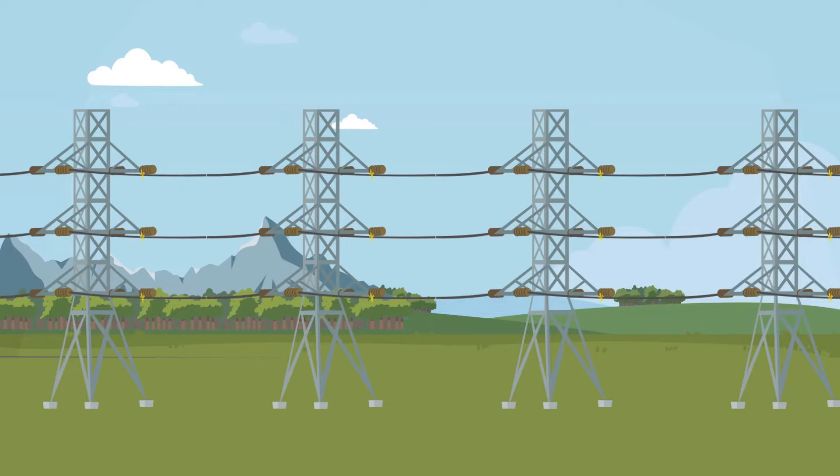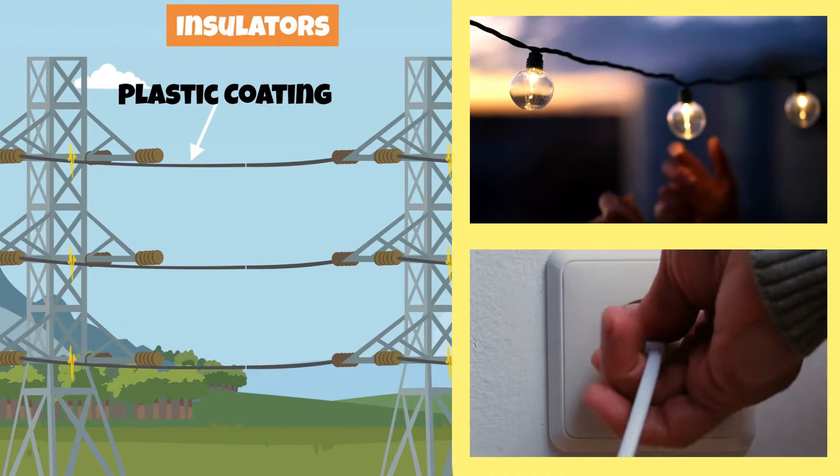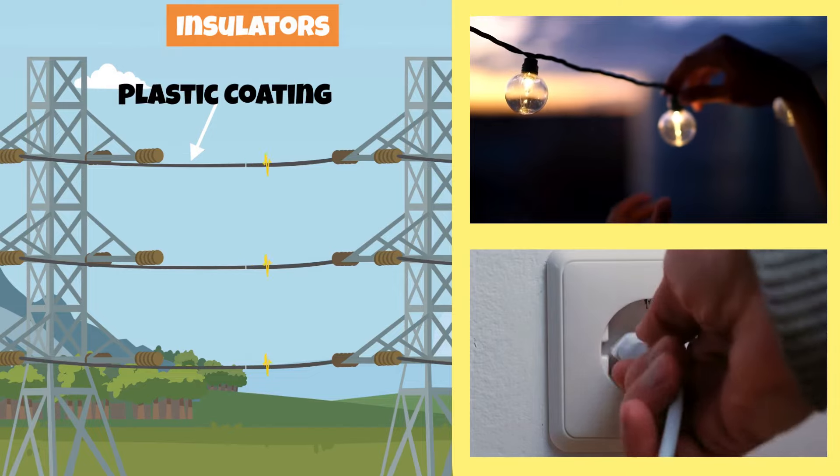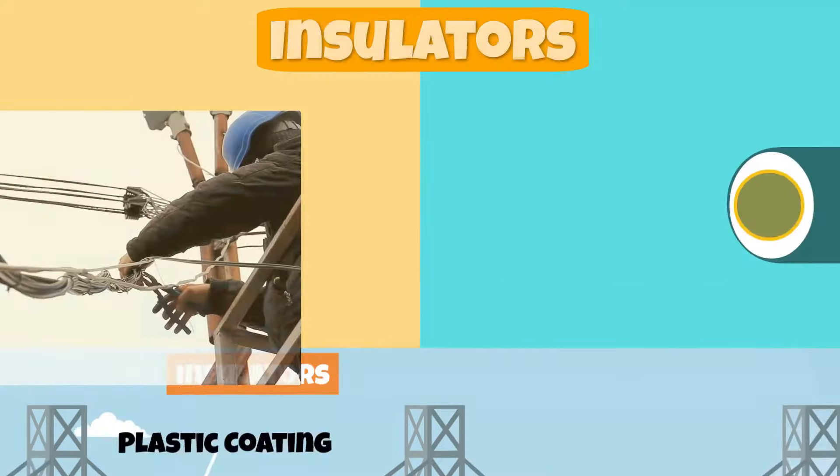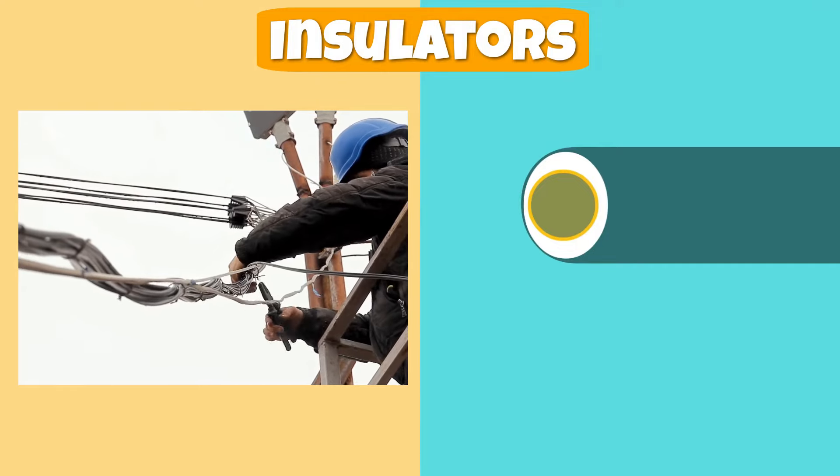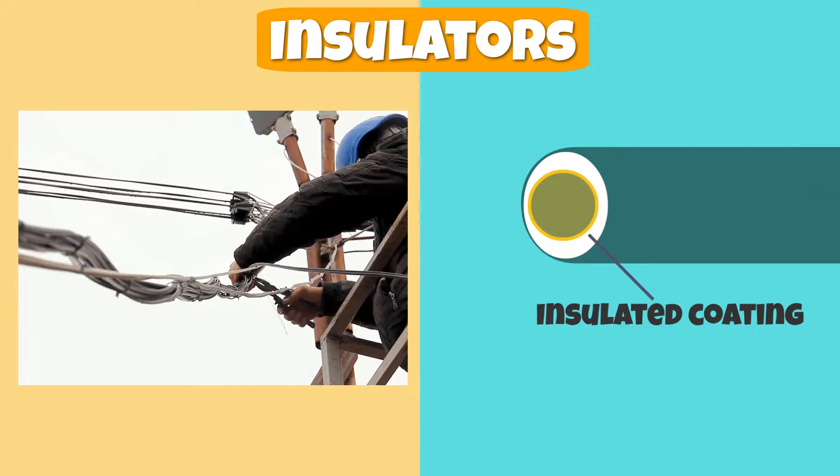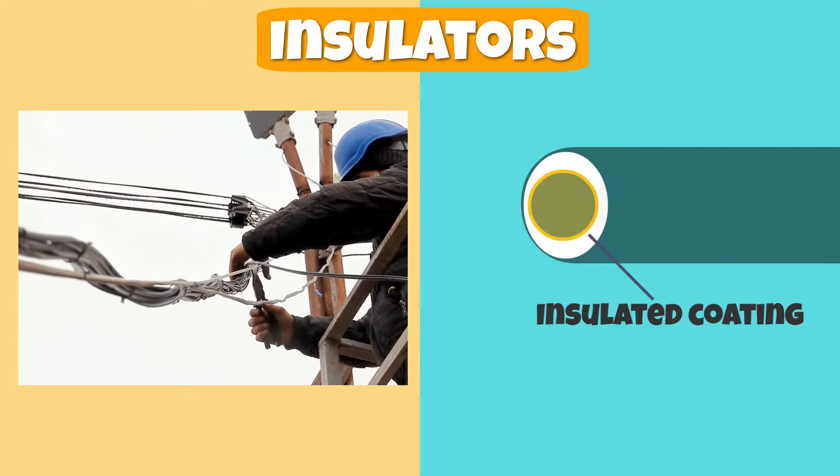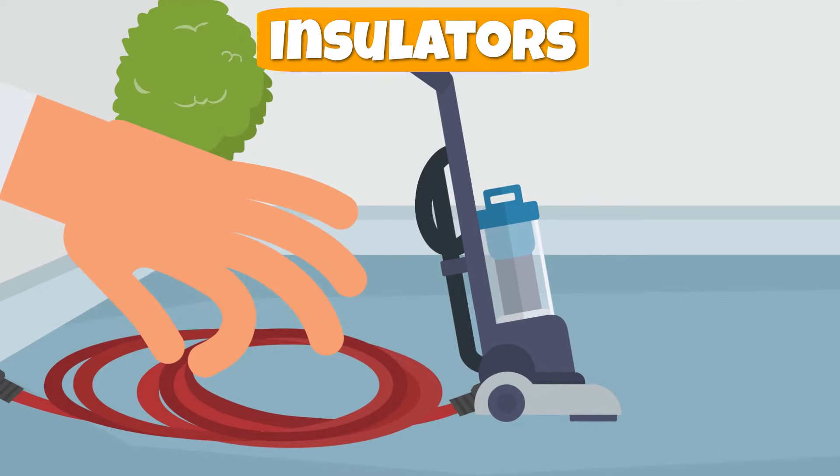Electric wires are covered in a rubber or plastic coating to prevent the copper from coming into contact with another conductor and allowing the energy to escape. This is a perfect example of an insulator because the insulated coating resists the flow of electricity and keeps it in place. When you grab a wire that is properly coated, the electricity does not flow to you and shock you, and that's a good thing.